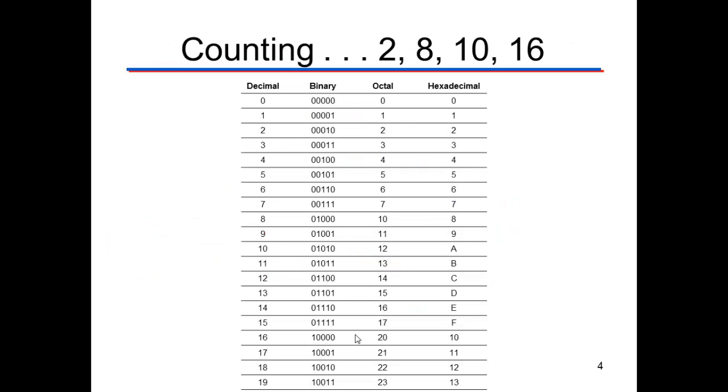This is giving you an overview of what the numbers look like from 0 to 19 in all four number systems. You'll notice hexadecimal includes some letters.